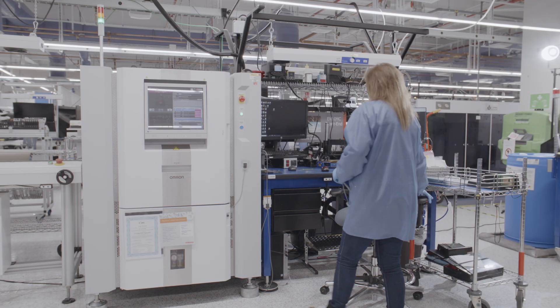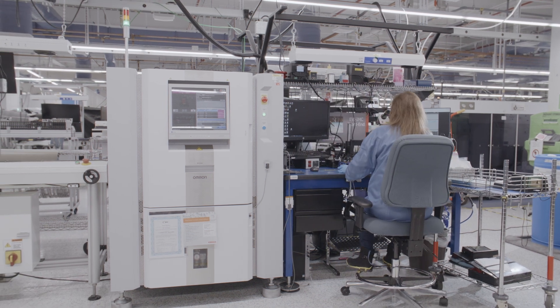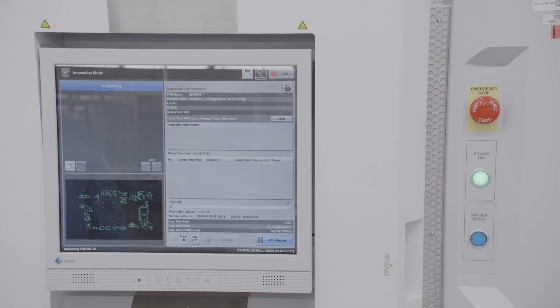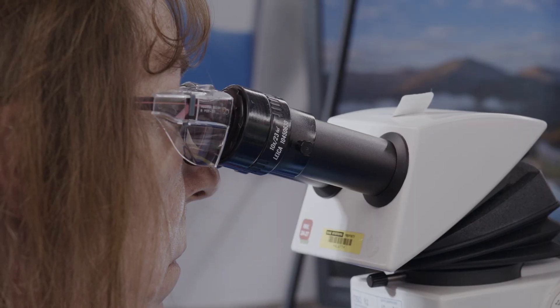At this stage, the board undergoes a visual check by an automated optical inspection machine. This confirms every component is where it should be. The data from these inspections is automatically collected and analyzed, facilitating early detection of issues.